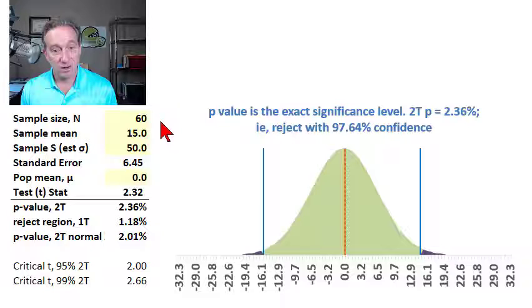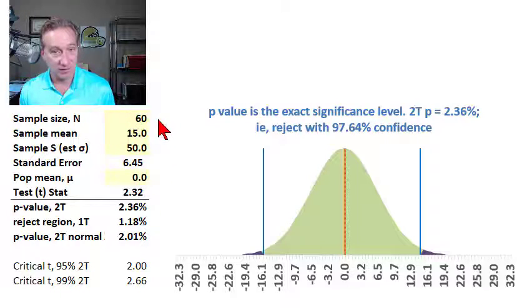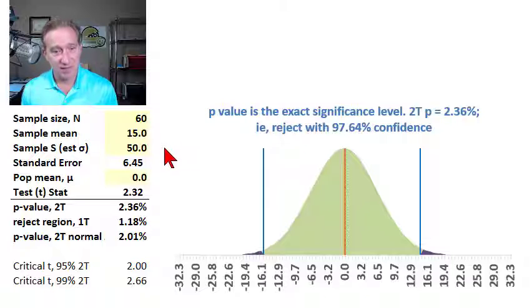Our unit of analysis is going to be monthly returns, and over the last five years, therefore, we have 5 times 12 or 60 monthly returns. For this fund manager, the sample mean or sample average is plus 15 basis points, in excess of the benchmark.